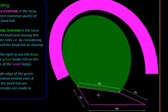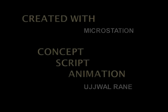Now imagine you just have the centrodes and you have done away with the mechanism, and this green centrode starts rolling without slip on this purple one. Even then link three will be getting an identical motion, so the centrodes can actually replace the mechanism.